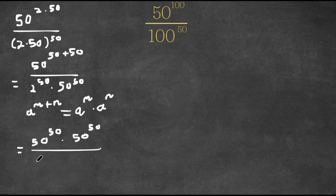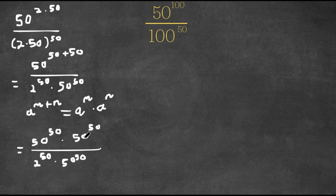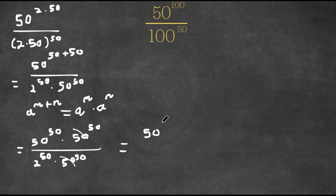And we are dividing this with 2 to the power of 50 times 50 to the power of 50. As you can see, we have 50 to the power of 50 in both the numerator and the denominator, so these two would cancel out, and this would equal 50 to the power of 50 over 2 to the power of 50.